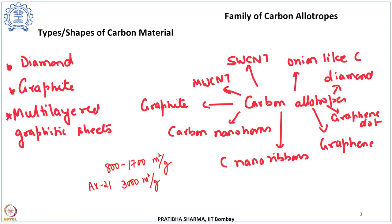Activated carbon and porous carbon have been found to be very good for hydrogen storage with higher hydrogen uptake capacity. These activated carbons have very high specific surface area — regular activated carbon can have a specific surface area of about 800 to 1700 square meters per gram, while highly porous forms of activated carbon can even have specific surface areas of up to 3000 square meters per gram.